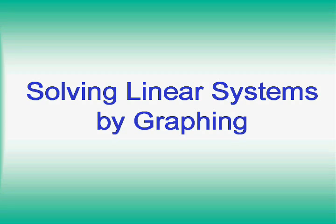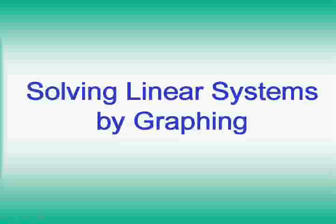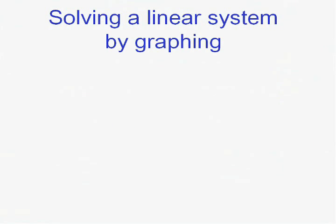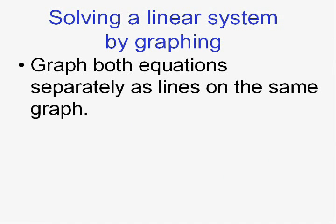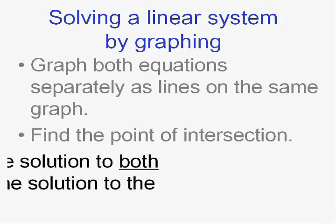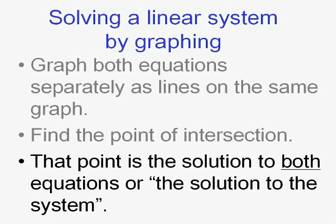We're going to find that point by graphing the lines first. To solve a system or find the point of intersection by graphing, all we're going to do is graph both equations separately but on the same grid, on the same graph. Then, just find the point where they touch and look at it and that's the answer.